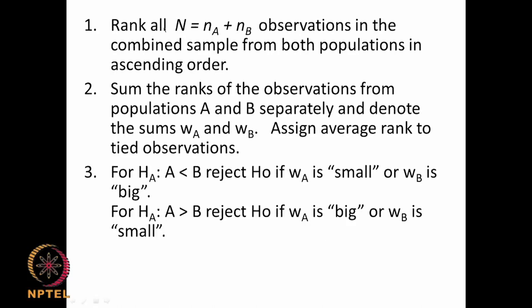What do we do? We rank all the data. Suppose we have NA observations for sample A and NB observations for sample B. We combine all the results together and rank them — assigning rank 1 to the smallest value and so on in ascending order, combining both groups. If there are tied observations, we assign the average rank — for example if two values both equal 16, we add their two ranks and divide by 2.